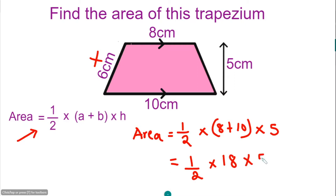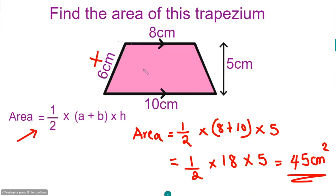Multiply by 5. Working this out, this is going to give you 45 cm squared. So the area of this trapezium is 45 cm squared.